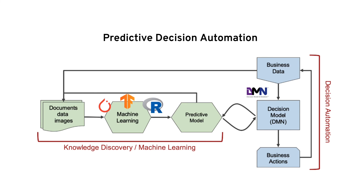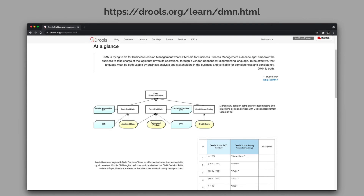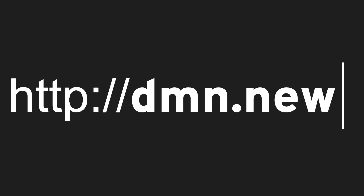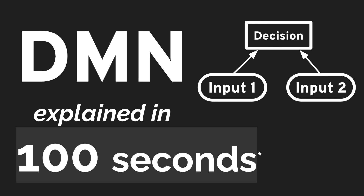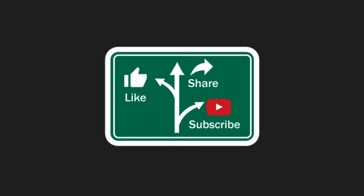You can find more information about DMN support in Drools at our website, and you can get started immediately by typing dmn.new in your browser. This was DMN explained in 100 seconds — please leave a like and subscribe to this channel if you would like to see more videos like this one.